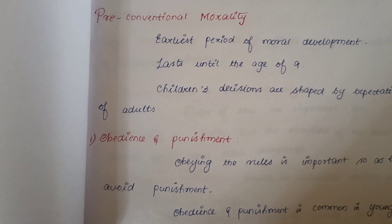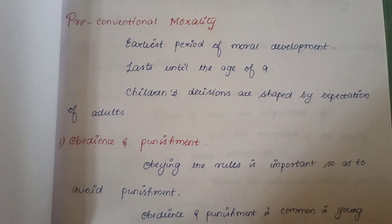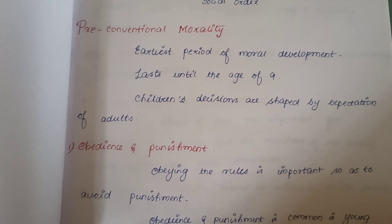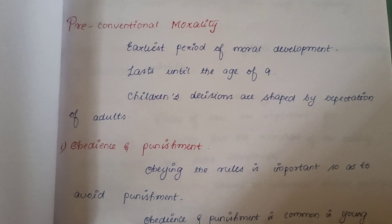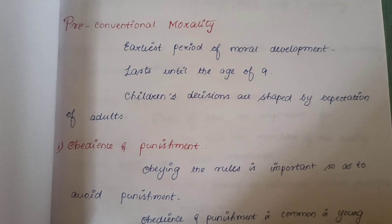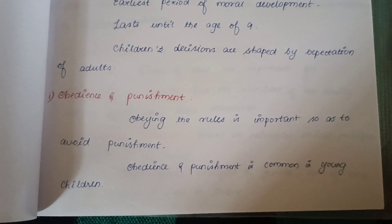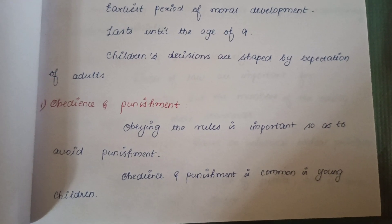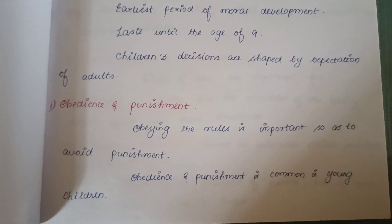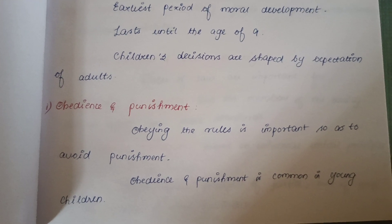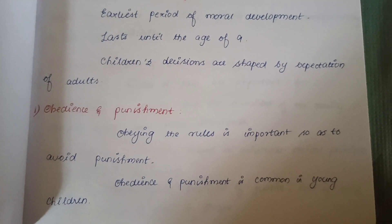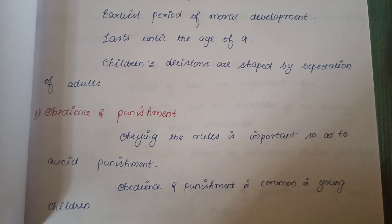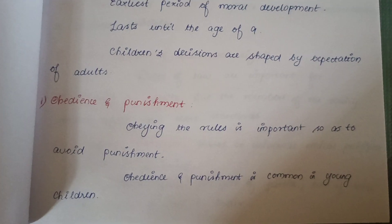The first primary level is pre-conventional morality. In pre-conventional morality, moral development is at a child's starting stage of life, around 9 years of age. The first stage is obedience and punishment — a child is ought to obey certain rules and regulations. If he or she does not obey, they will be punished.